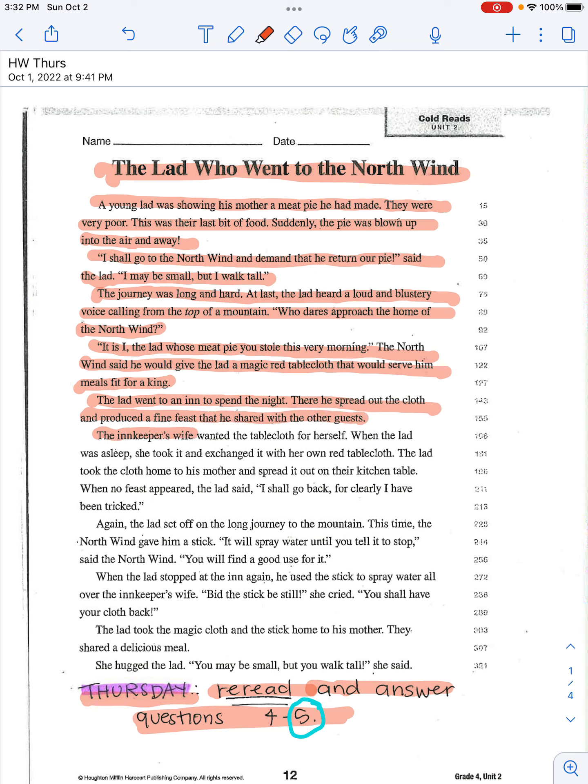There, he spread out the cloth and produced a fine feast that he shared with the other guests. The innkeeper's wife wanted the tablecloth for herself. When the lad was asleep, she took it and exchanged it with her own red tablecloth. The lad took the cloth home to his mother and spread it out on their kitchen table. When no feast appeared, the lad said, I shall go back, for clearly I have been tricked.